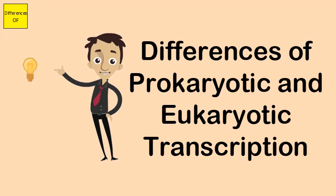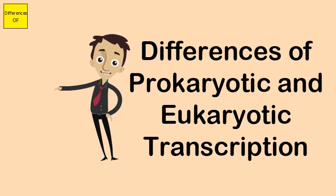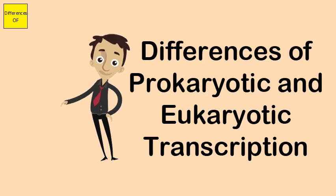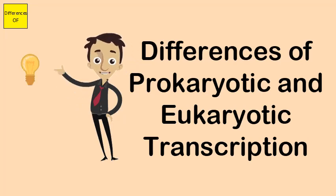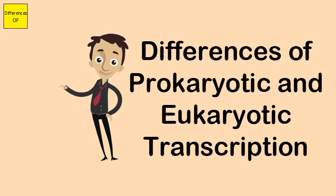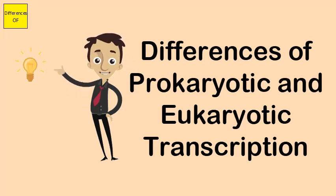In prokaryotic transcription, the transcriptional unit has one or more genes — it is polycistronic. In eukaryotic transcription, the transcriptional unit has only one gene — it is monocistronic.